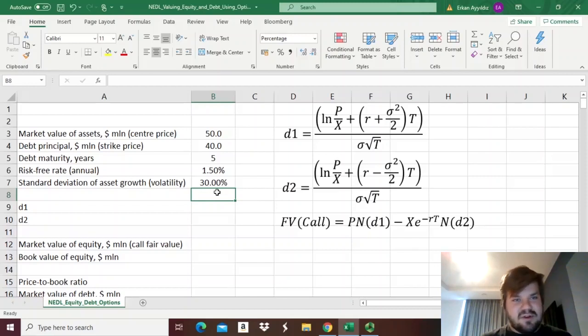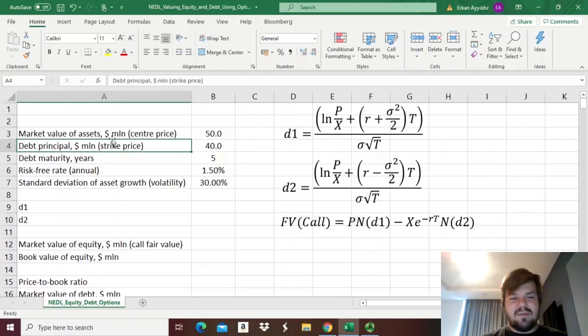The logic is very similar, there is no actual options being traded in that case. But, if the market value of assets of the company, at the end of the period when it has to repay its debts, exceeds the strike price, air quotes strike price, the debt principle, then the shareholders are left with something. What is that something? That's just the difference between the market value of assets at that point, and the debt principle that it has to repay to its bondholders first, as a priority, because of the corporate code, and so on.